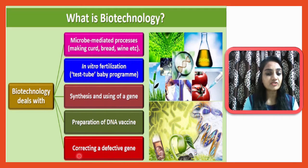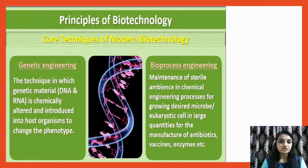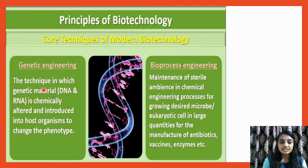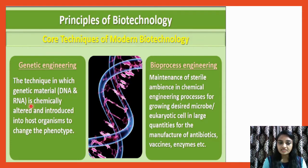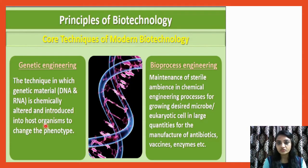Modern biotechnology is based on two principles: first is genetic engineering, and second is bioprocess engineering. Genetic engineering is the technique in which genetic material — DNA and RNA — is chemically altered or modified and introduced into a host organism to change its phenotype.